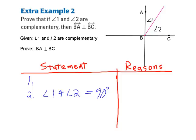Next example. Proof. Prove that if angle 1 and angle 2 are complementary, then line BA is perpendicular to line BC. So we want to show that those, in fact, are perpendicular. So we go ahead and write down the given. They gave us that angle 1 and angle 2 are complementary, and they've asked us to prove that line BA is perpendicular to line BC. I'm adding little double-headed arrows on the top to indicate lines.